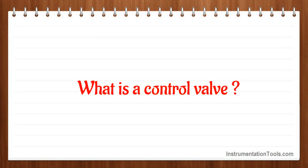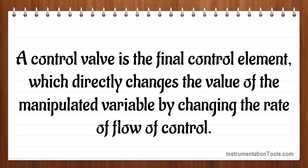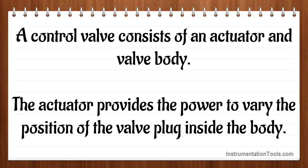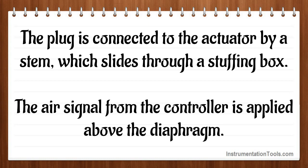What is a control valve? A control valve is the final control element, which directly changes the value of the manipulated variable by changing the rate of flow of control. A control valve consists of an actuator and valve body. The actuator provides the power to vary the position of the valve plug inside the body. The plug is connected to the actuator by a stem, which slides through a stuffing box.